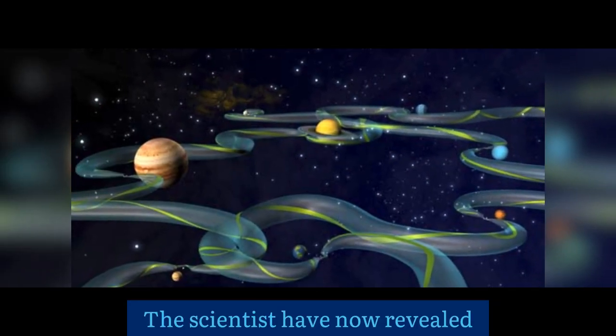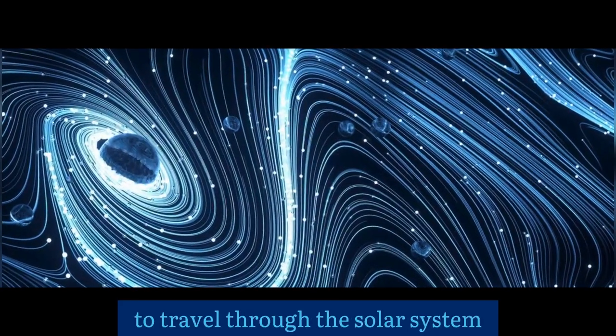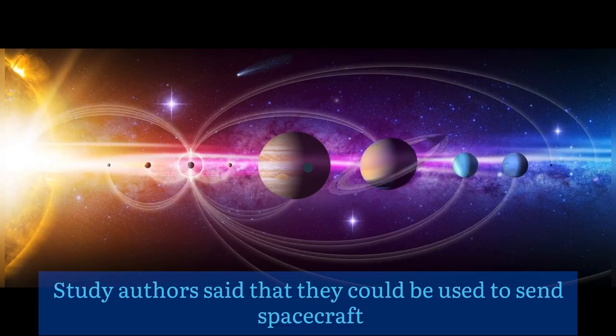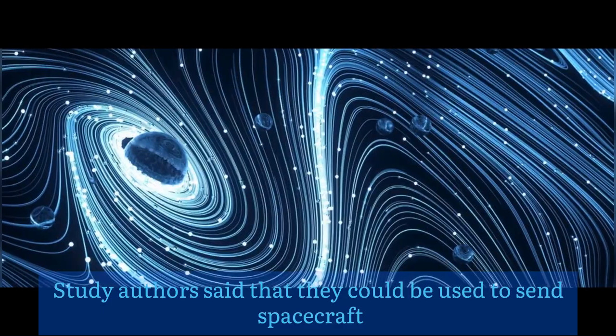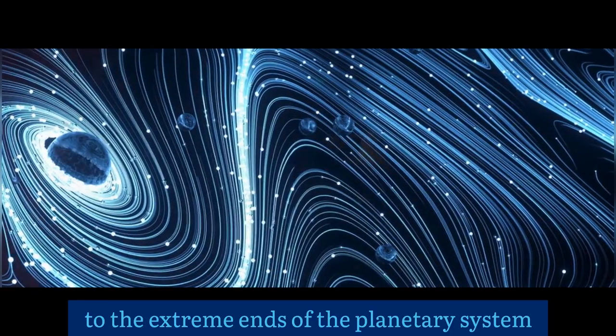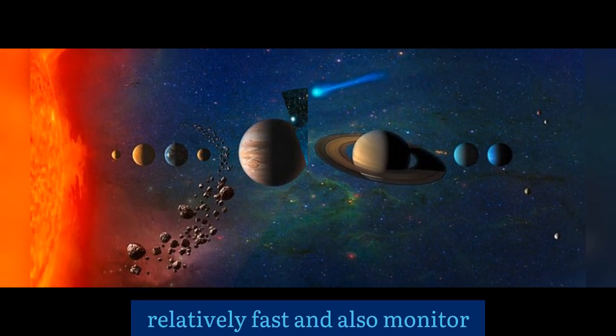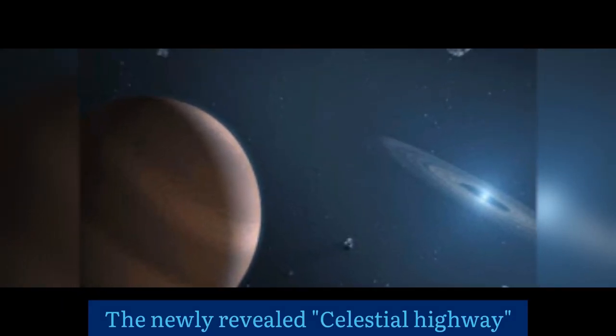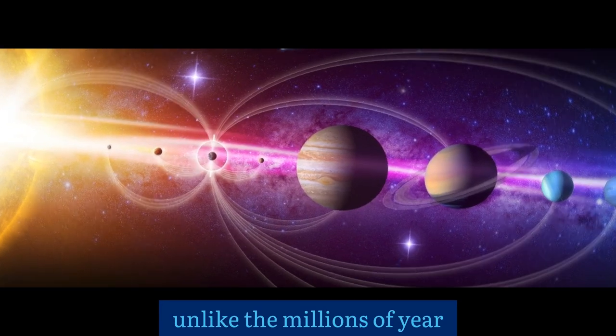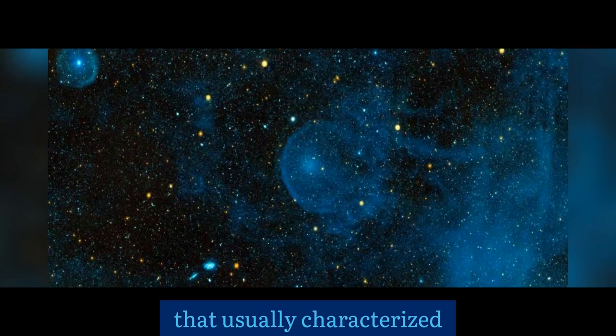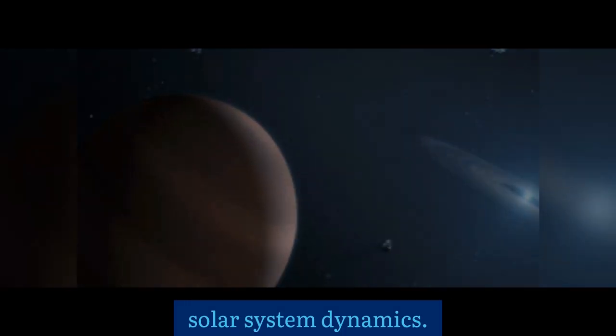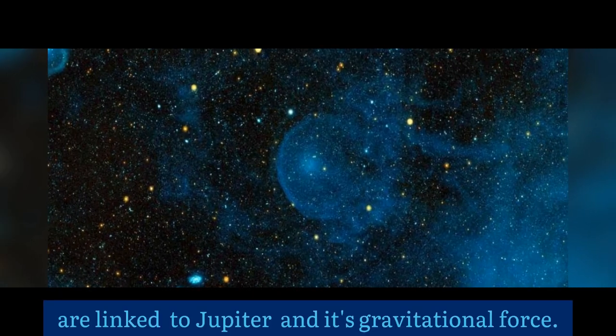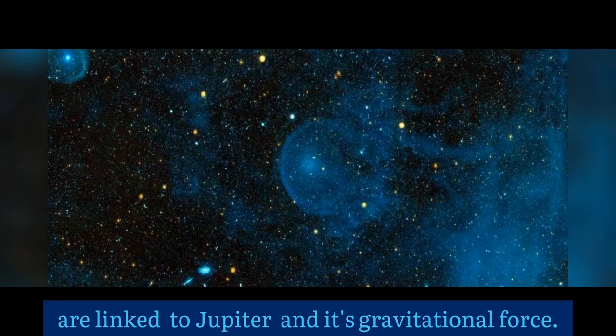Scientists have now revealed a superhighway network to travel through the solar system much faster than was earlier thought possible. Study authors say that it could be used to send spacecraft to the extreme ends of the planetary system relatively fast and also monitor near-Earth objects. The newly revealed celestial highway acts over several decades, unlike the millions of years that usually characterize solar system dynamics. According to the researchers, the most prominent structures are linked to Jupiter and its gravitational force.